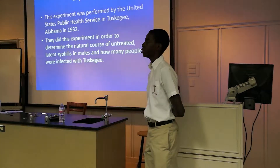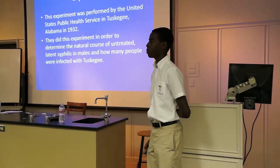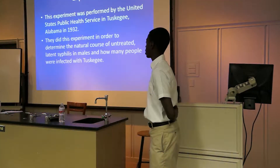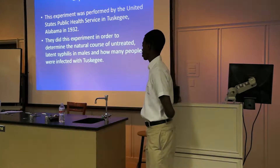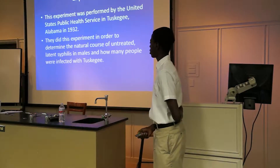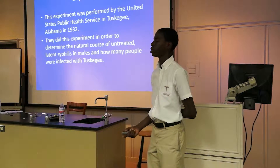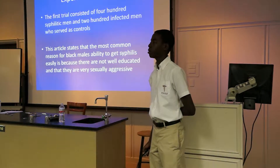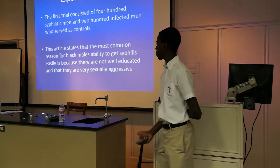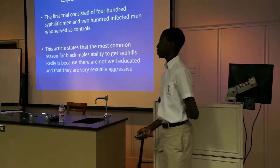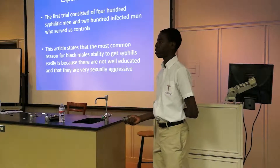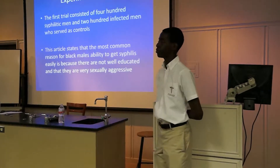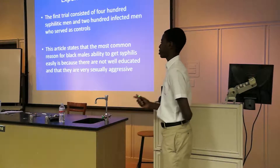The experiment. This experiment took place in Tuskegee, Alabama, and was conducted by the United States Public Health Service. They performed the experiment to determine the natural course of how syphilis develops and to see how many men or women could contract the disease. The first trial consisted of syphilitic men and women, and 200 infected men who served as controls. Back then, there were many stereotypes and racial slurs directed at minorities — mainly Black people. One cited claim was that the main reason Black males were more likely to get syphilis was that they were not educated and were sexually aggressive.